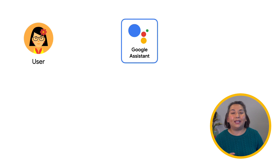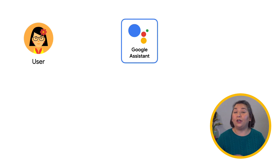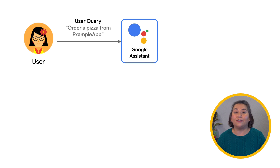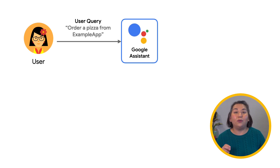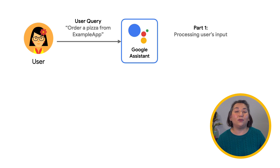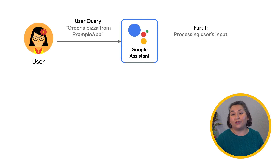Let's go over how it works, key concepts, and highlight some key features. When a user says, "Hey Google, order a pizza from example app," Google Assistant will process the user's input using Google's NLU and matches an intent from the user's speech.